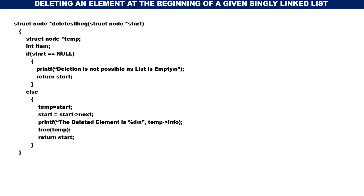Actually, int item is not required in the function. What we can do is: item = temp->info, then display item — or we can skip item altogether. So the logic is: if start is NULL, deletion is not possible; otherwise, temp = start, move start one node to the next with start = start->next, print temp->info, free(temp), and return start. Deleting an element at the beginning of a singly linked list is quite simple.